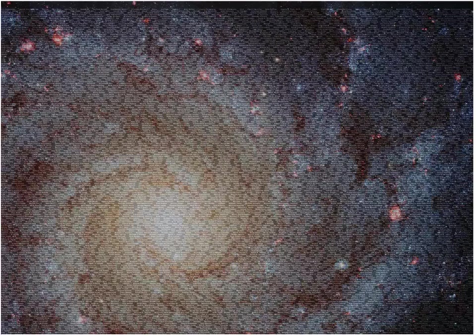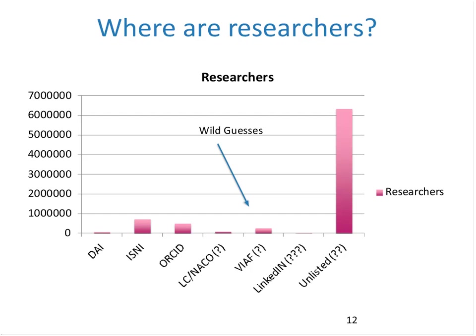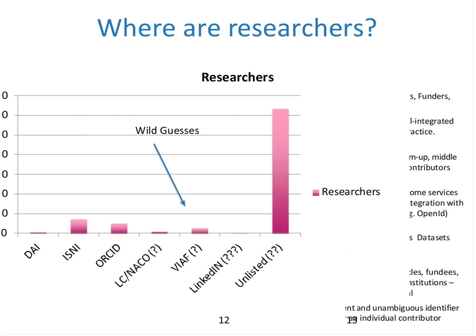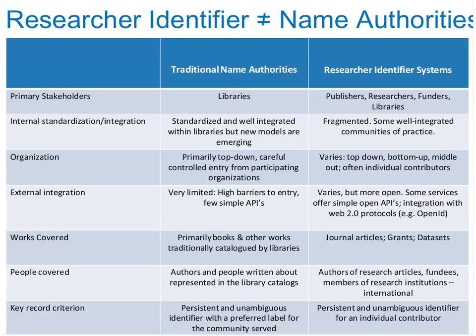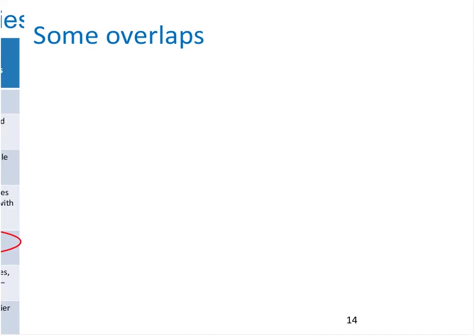How many researchers are there? We've extrapolated from World Bank statistics that the total number of researchers worldwide was 9 million in 2012. We do know there is no one system that includes all researchers. Although both name authority files and researcher identifier systems represent researchers by persistent and unambiguous identifiers, researcher identifier systems include researchers cited in journal articles who have received grants or have created data sets, all of which may not be represented in authority files. In addition, authority files provide a preferred label for researchers based on the community they serve, while identifier systems are agnostic about forms of names.